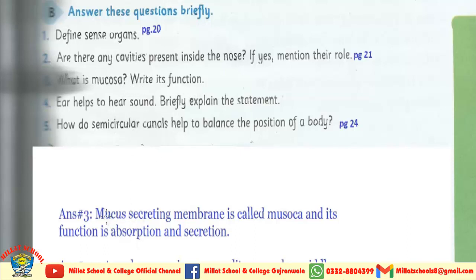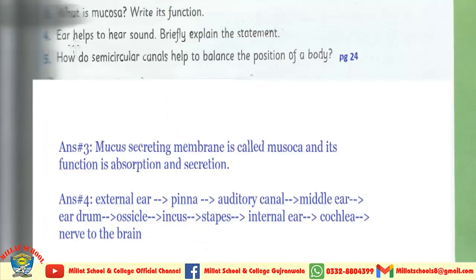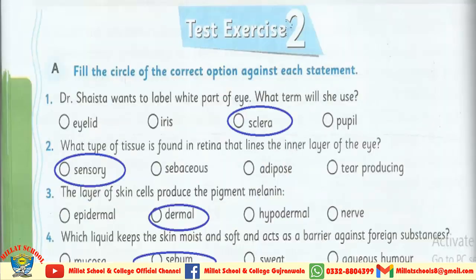What is mucosa? Write its function. Mucous secreting membrane is called mucosa, and its function is absorption and secretion. Fourth one: Ear helps to hear sound — briefly explain the statement. Students، question number 3 and 4 کا answer آپ لوگوں کو screen پر دکھا دیا گیا ہے۔ Now for text exercise number 2, open page number 28.